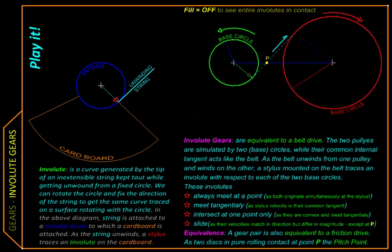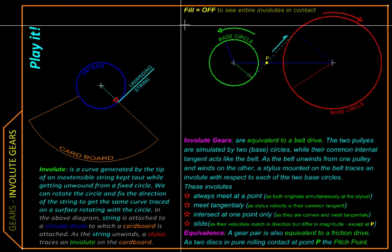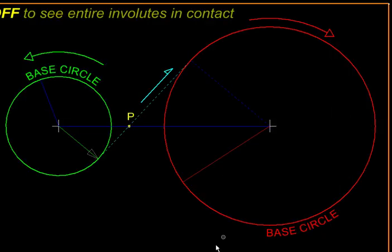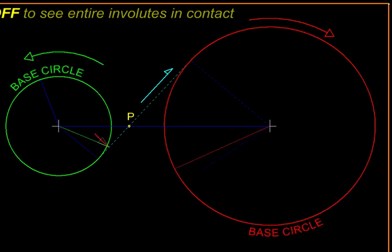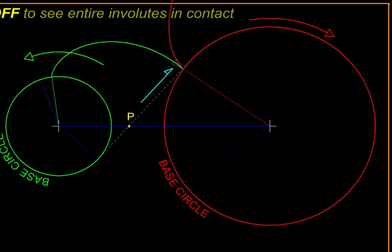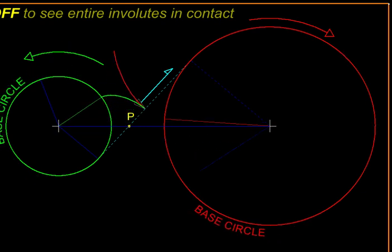So far we have seen how we can start from a belt drive and arrive at a gear tooth profile called involute, and how such profiles called conjugate profiles engage to give us a constant velocity ratio and a positive drive.